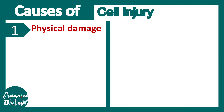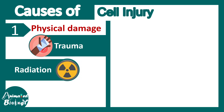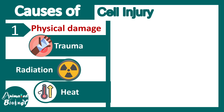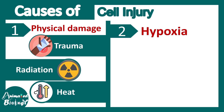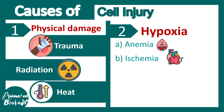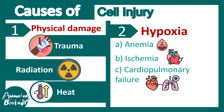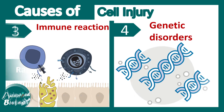The first cause of cell injury is physical damage, like trauma, radiation, or injury due to heat. The second cause is hypoxia — lack of oxygen. It could be due to anemia, ischemia, cardiopulmonary failure, or even CO poisoning. These are a few of the causes of hypoxic injury.